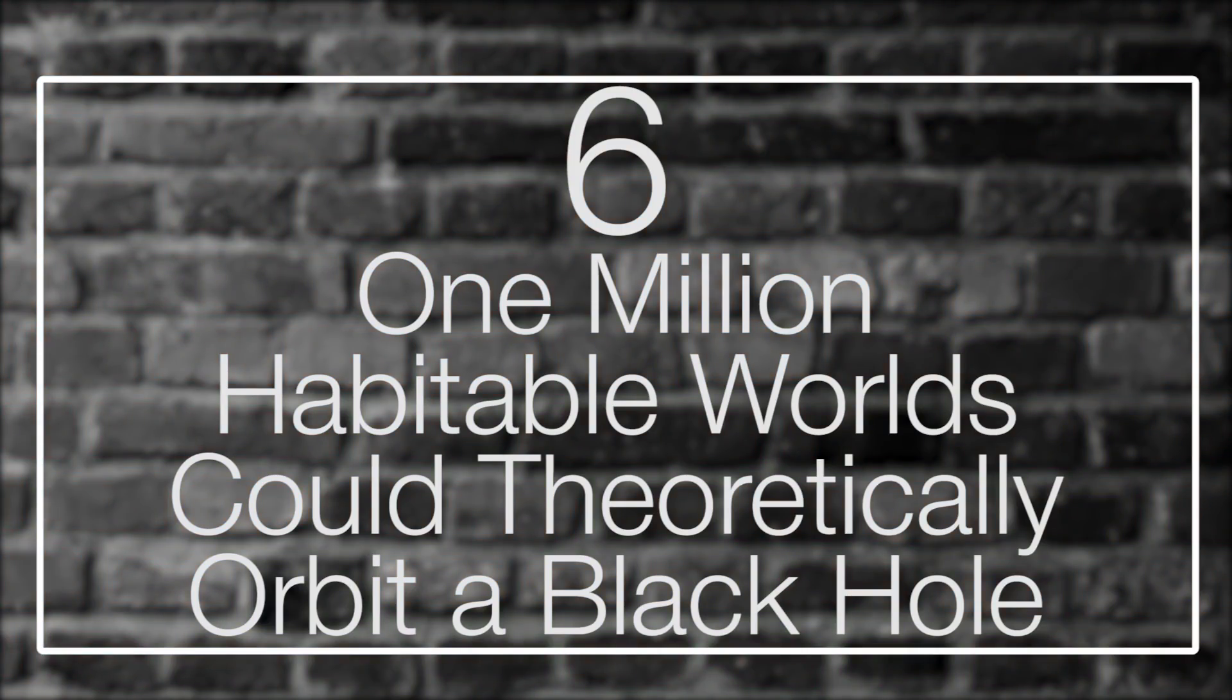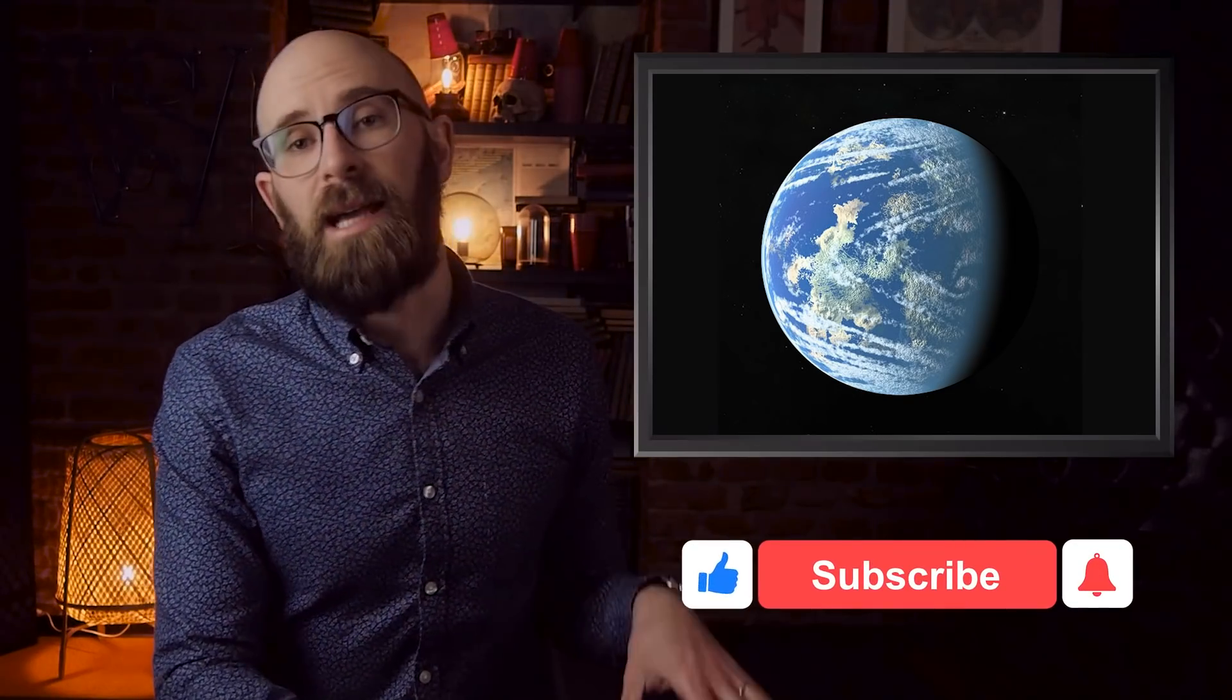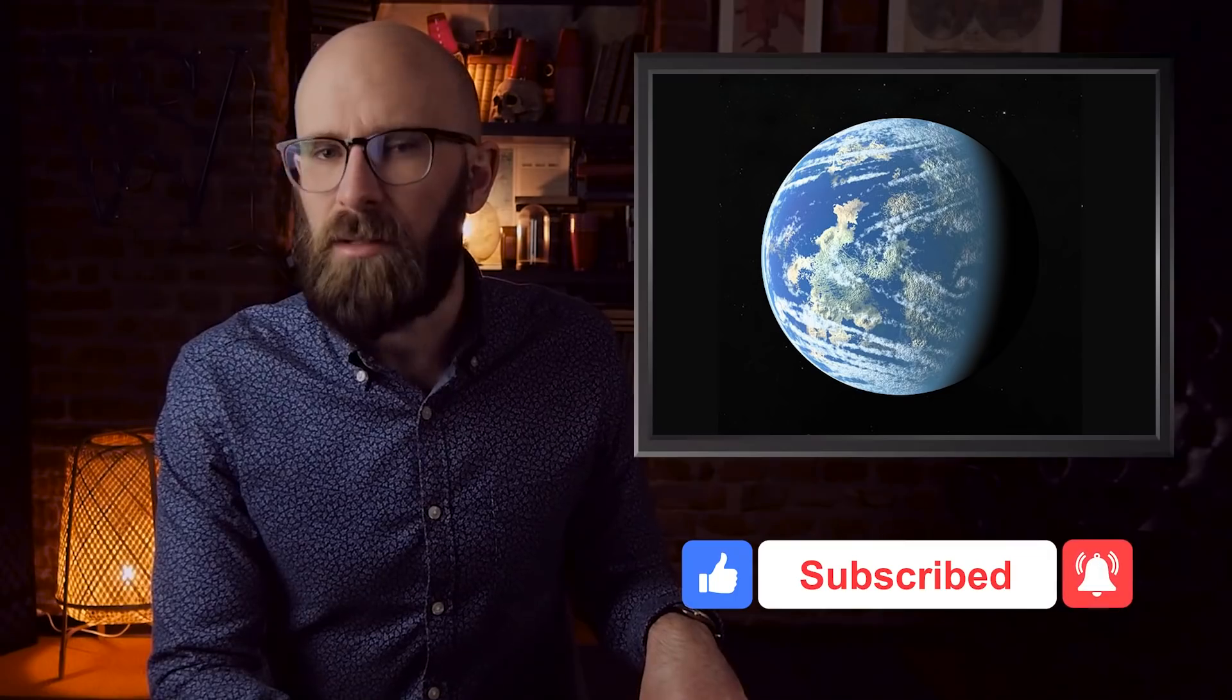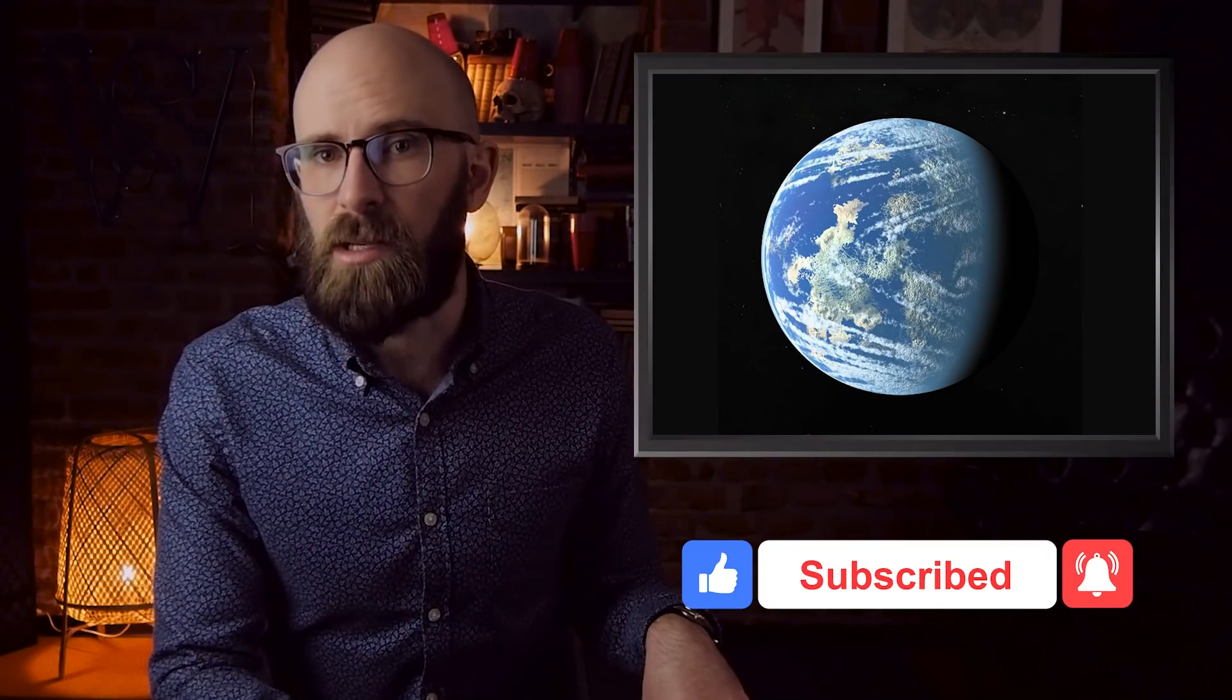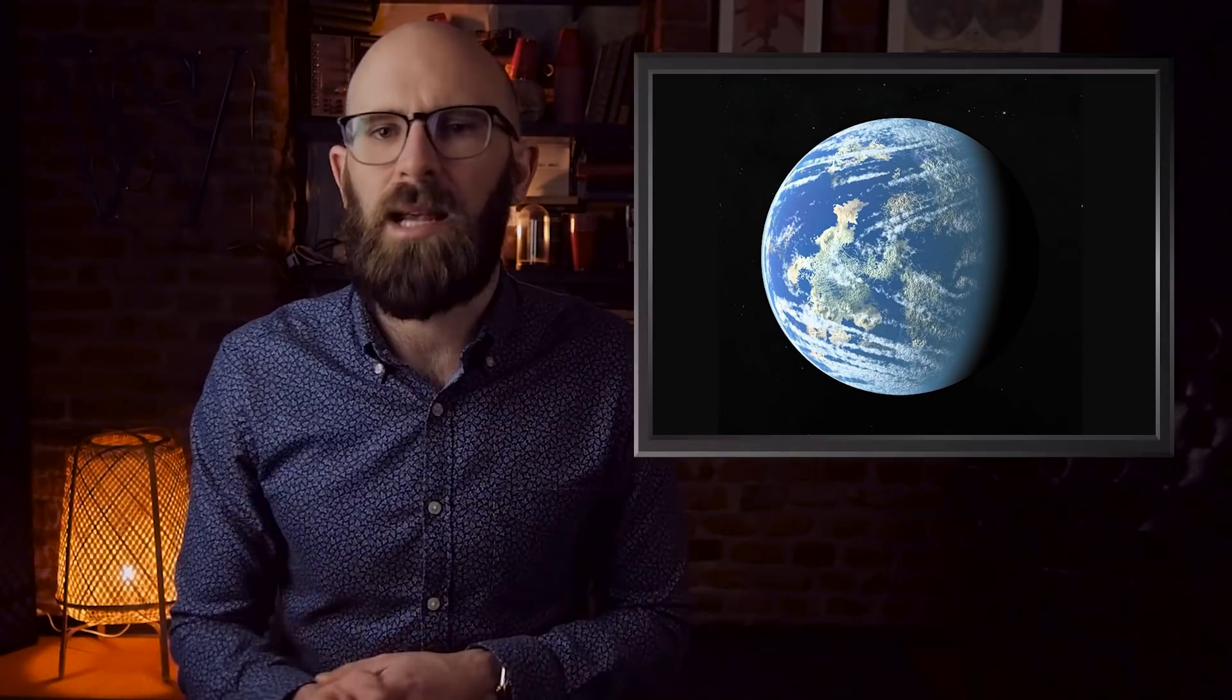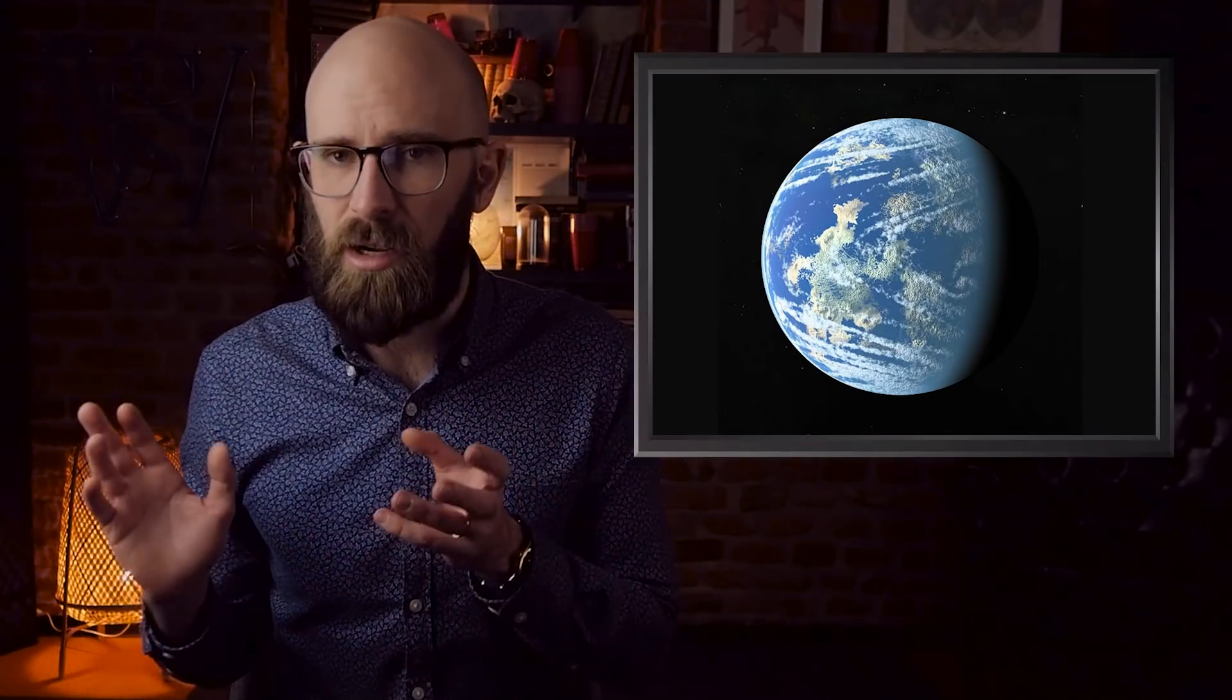Number 6: One Million Habitable Worlds Could Theoretically Orbit A Black Hole. Our typical desire is to find exoplanets around stars like our own, and while we've found a few of those and a few thousand around stars not totally like our own, we tend to be pretty biased about where we think life can and cannot arise. After all, it happened on Earth, so clearly that's the most likely scenario, right?